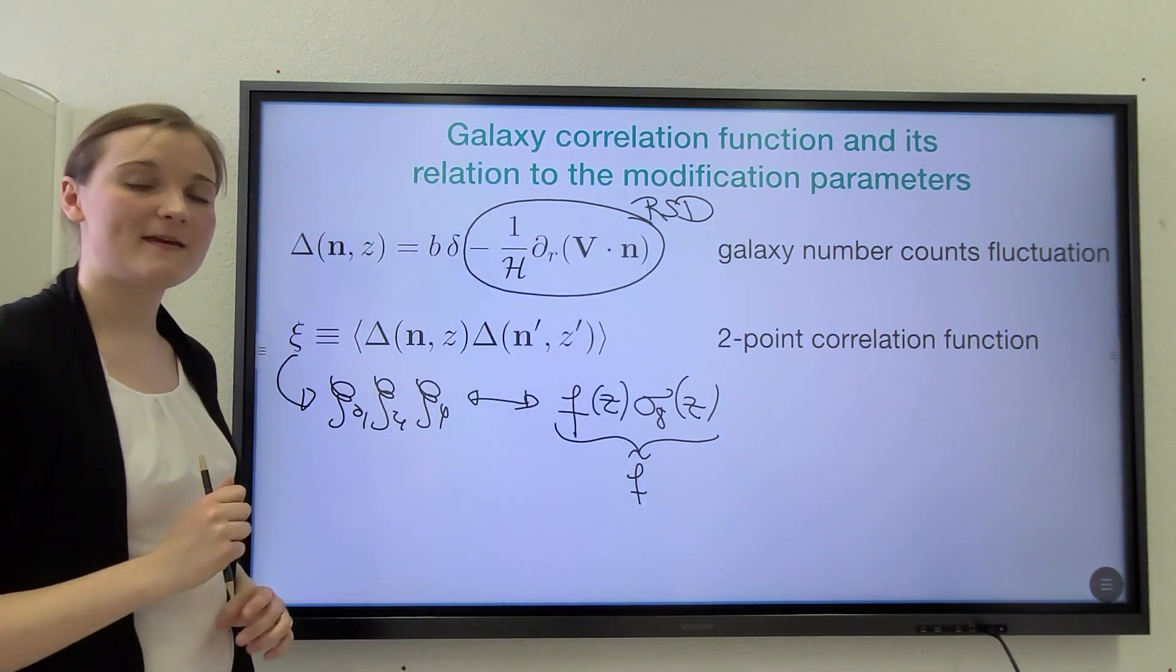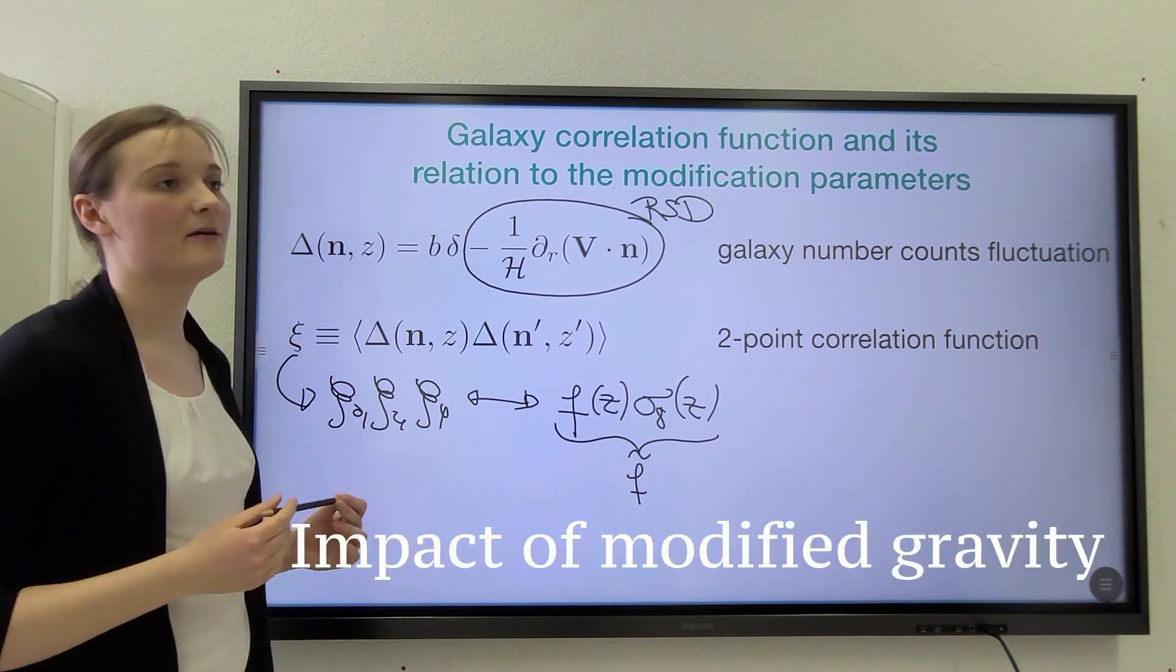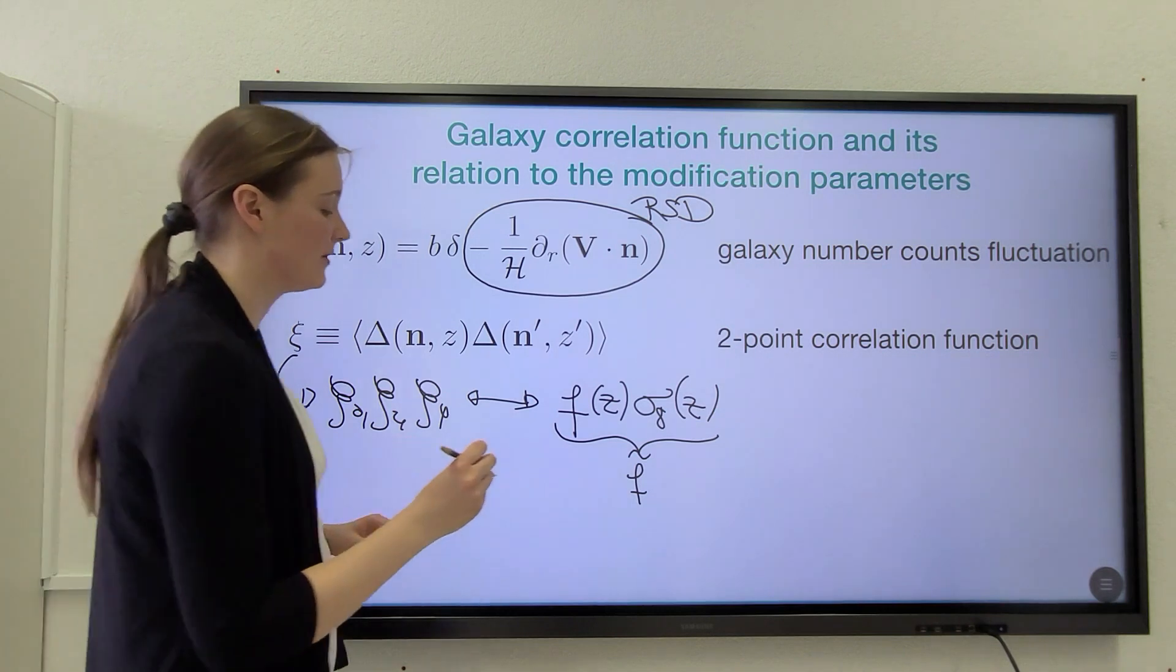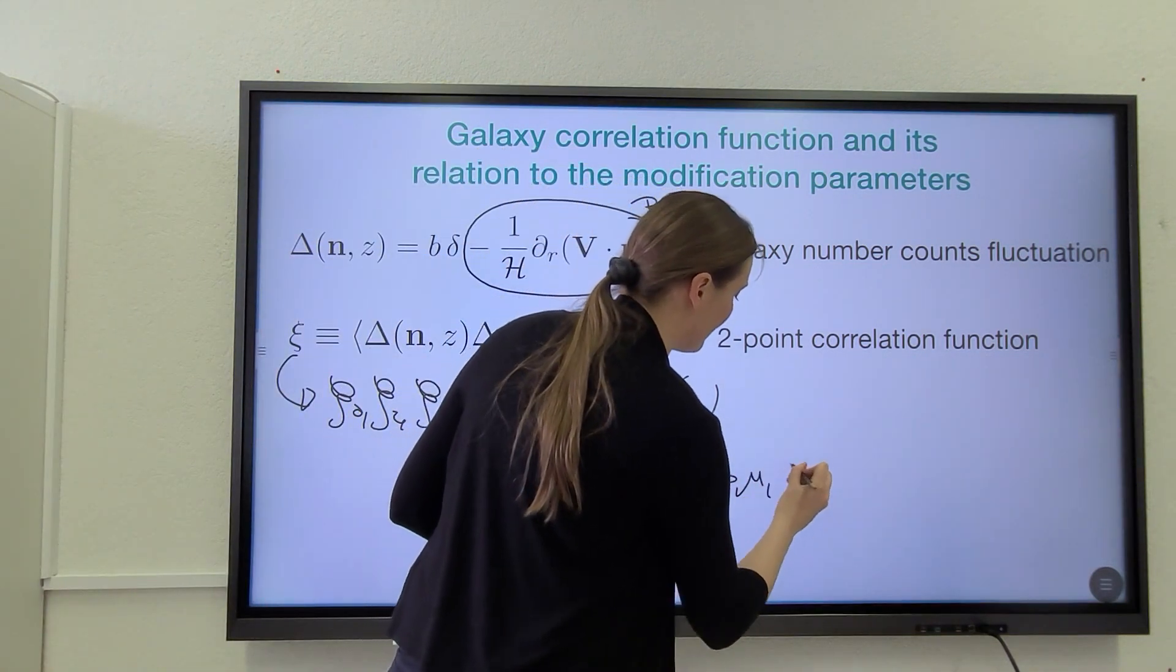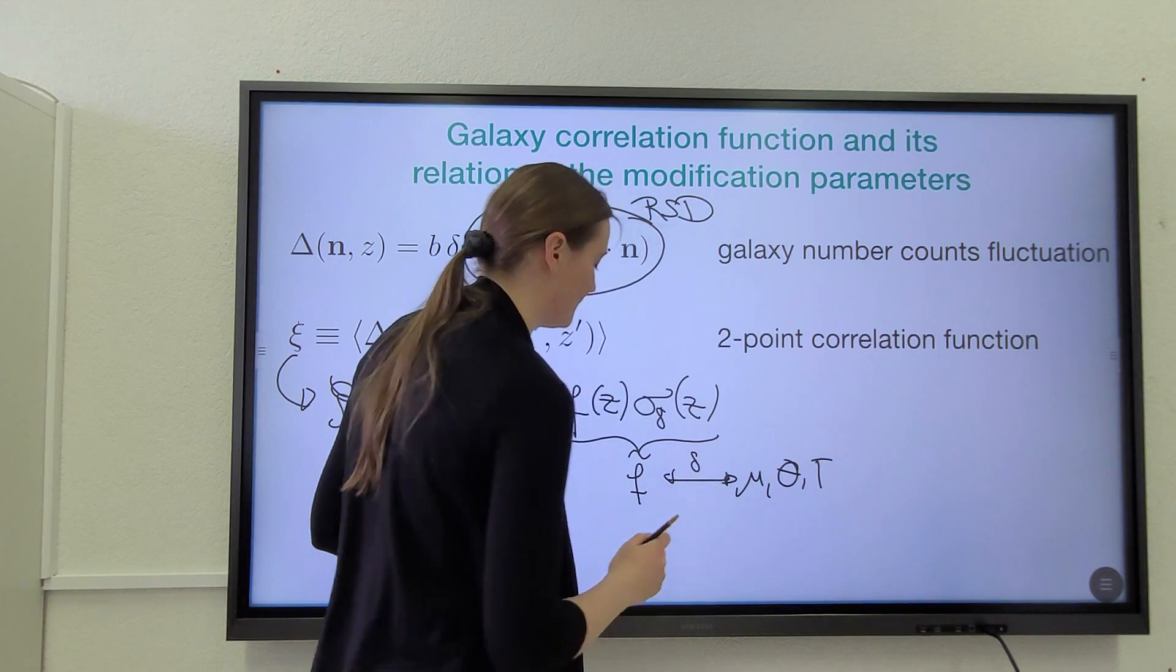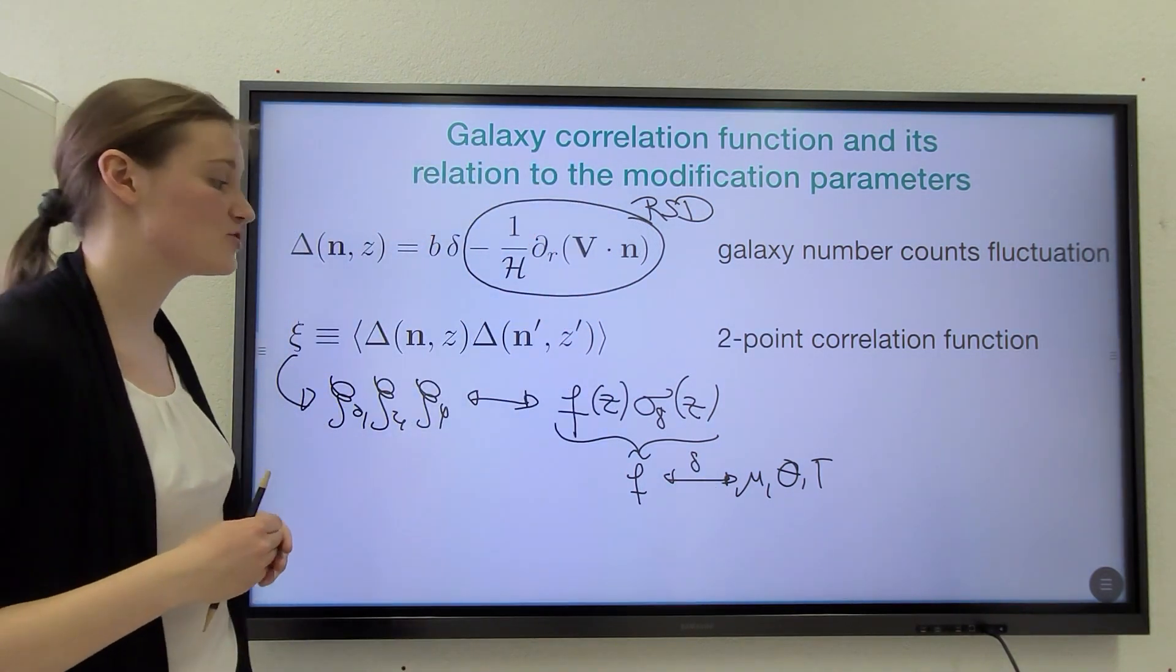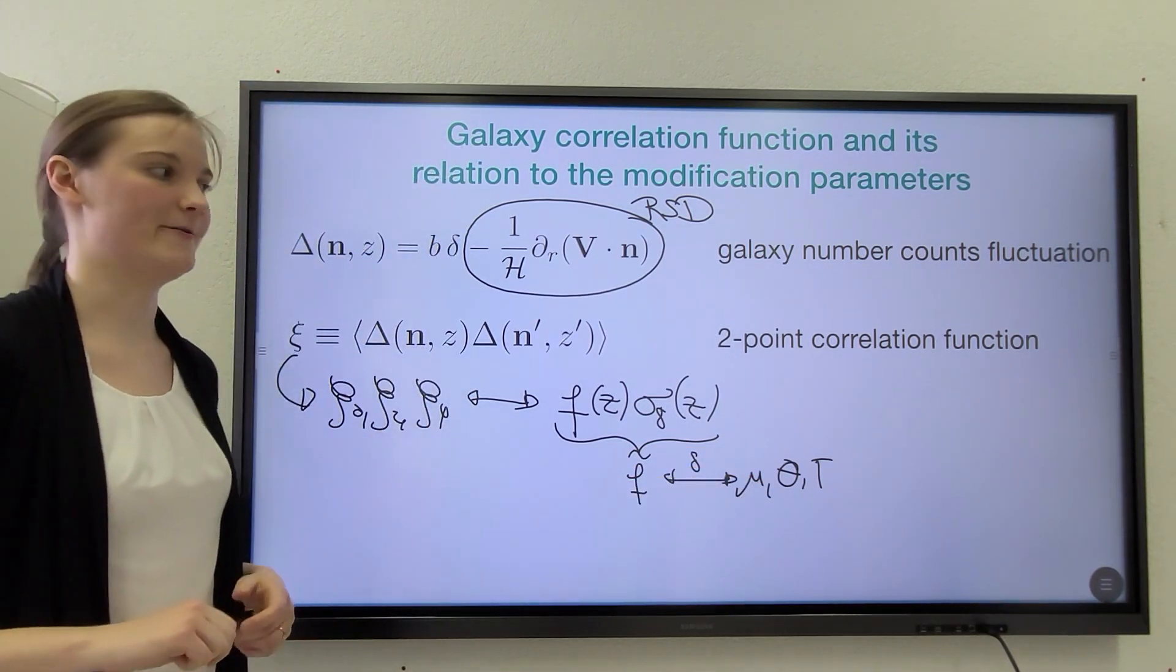And the interesting thing is that this parameter tilde f encodes the impact of modified theories of gravity. Indeed, it can be connected to our parameters mu, theta and gamma via the evolution equation for delta, which we have seen before. So RSD surveys can, in principle, find constraints on these parameters. But as we will see next, there are a lot of degeneracies here.